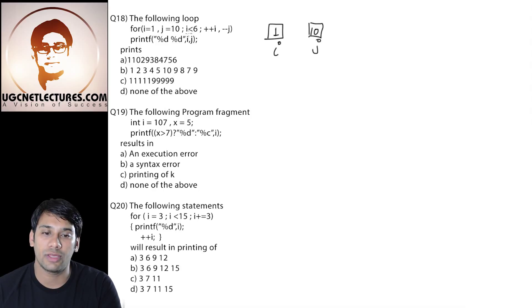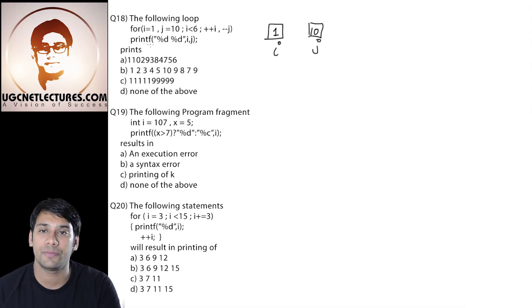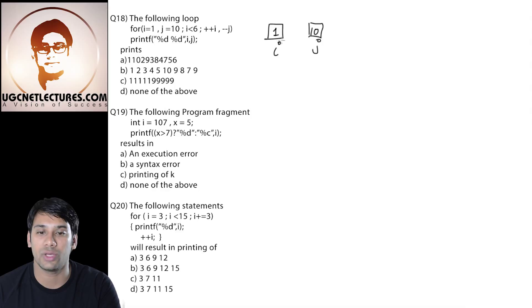Then we are having this condition. In this condition, I am checking whether the value of i is less than 6 or not. The value of i is 1, which is less than 6. Therefore, we will come to this printf statement — it is going to print the value of i and j. Value of i is 1 and value of j is 10 initially, so it is going to print 1 and 10.